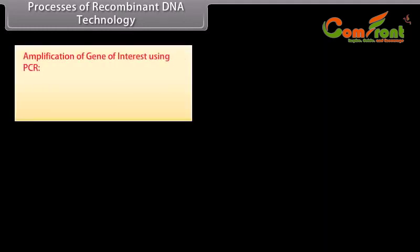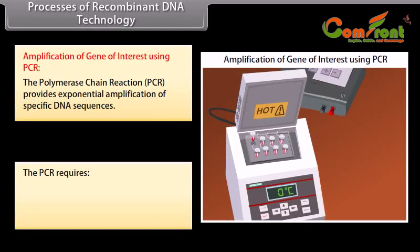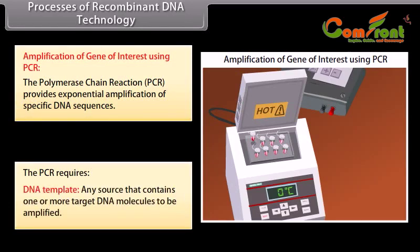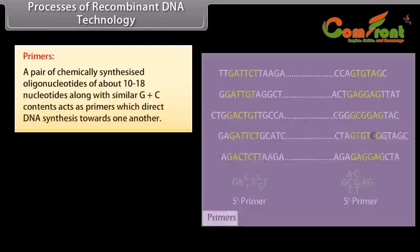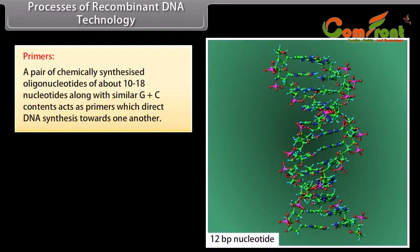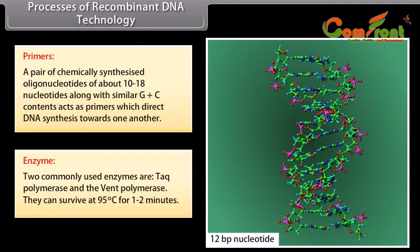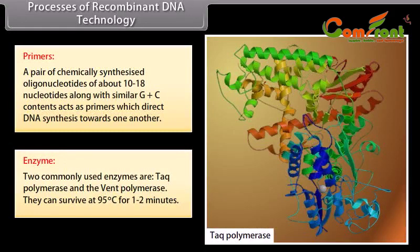Amplification of gene of interest using PCR. The polymerase chain reaction (PCR) provides exponential amplification of specific DNA sequences. PCR requires: a DNA template — any source containing one or more target DNA molecules to be amplified; primers — a pair of chemically synthesized oligonucleotides of about 10 to 80 nucleotides with similar G plus C content that act as primers directing DNA synthesis towards one another; and enzyme — two commonly used enzymes are Taq polymerase and Vent polymerase, which can survive at 95 degrees Celsius for one to two minutes.